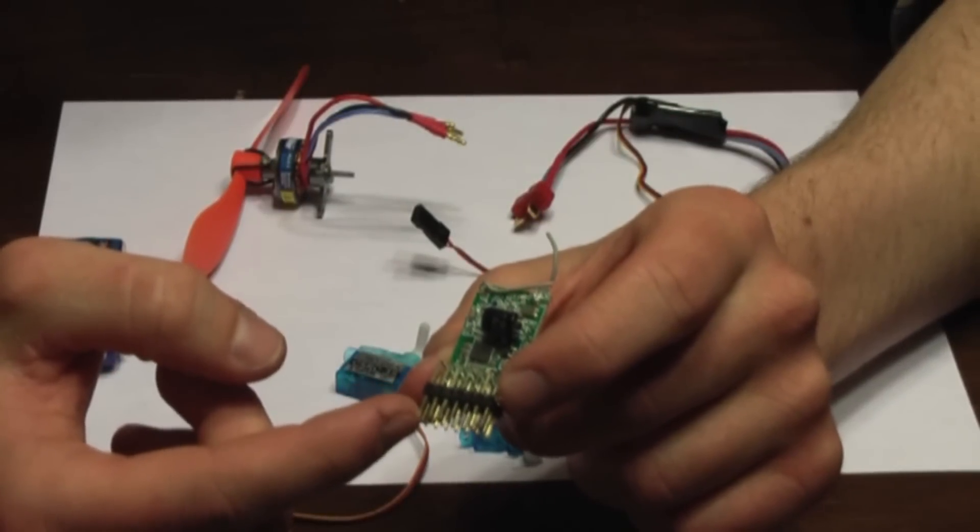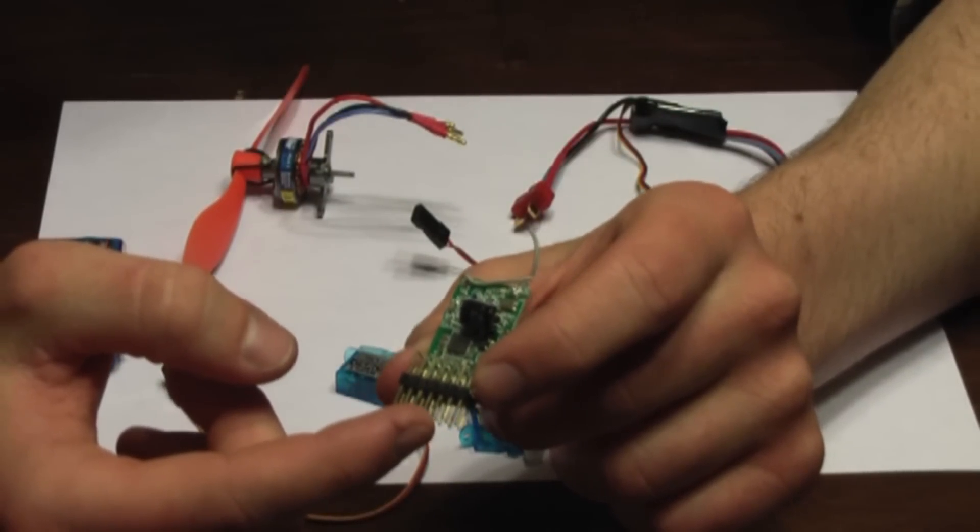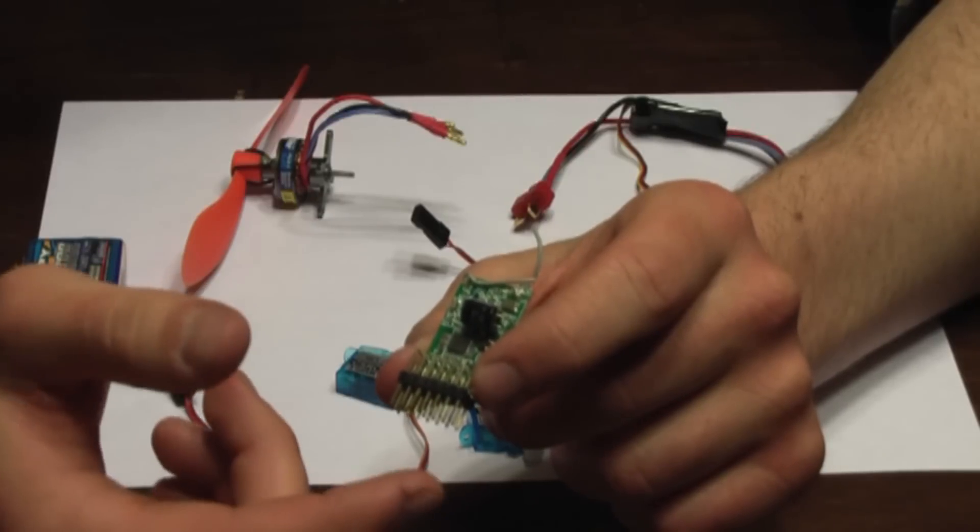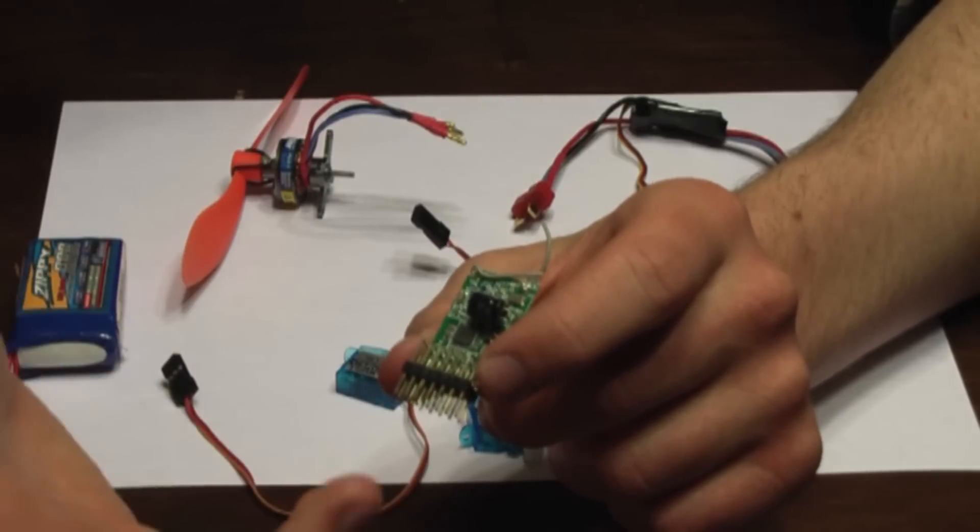Each one of these sets of pins is labeled to tell you where they go. You've got a throttle channel, you've got aileron, elevator, rudder, and then depending on how many channels you have, you've got gear, auxiliary one, auxiliary two, whatever.